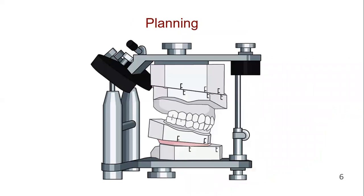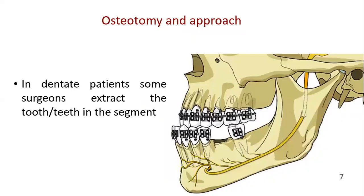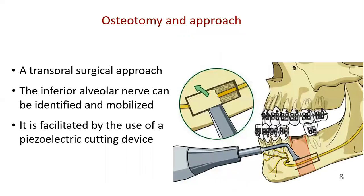Do a proper planning of orthognathic surgery. In indicated patients, some surgeons extract the tooth or teeth in the segment which is going to be resected before performing osteotomies. A transoral surgical approach is routinely used. The inferior alveolar nerve can be identified and mobilized after removing the lateral cortical bone.